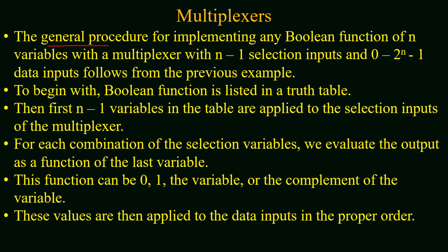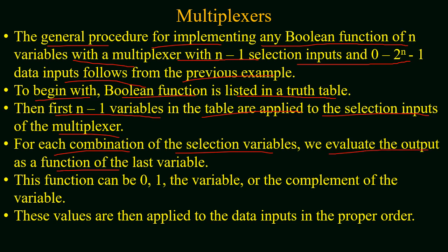To summarize the general procedure for implementing any boolean function of n variables with a multiplexer: for an n-variable function, the first n minus one variables act as selection inputs. Before starting the implementation, make a truth table of the given function. The first n minus one variables are applied to the selection inputs, and for each combination of the selection variables we evaluate the output as a function of the last variable. The output function can be 0, 1, the last variable, or its complement. These values are applied to the data inputs in the proper order, and through this method we can implement any boolean function with a multiplexer.